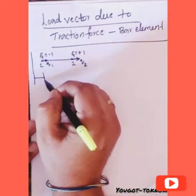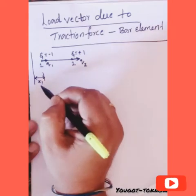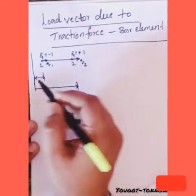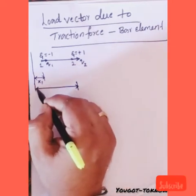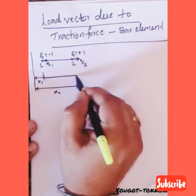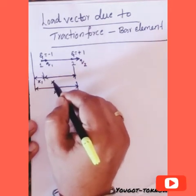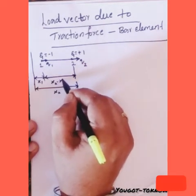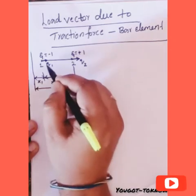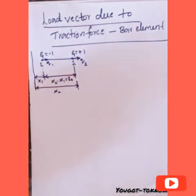From the origin to node 1, we know that is x1; from the origin to node 2, that is x2. The distance in between is x2 minus x1, which we can read as the length of the element, L_e.